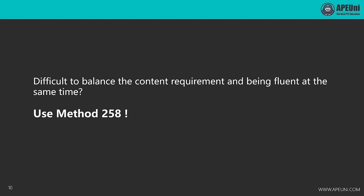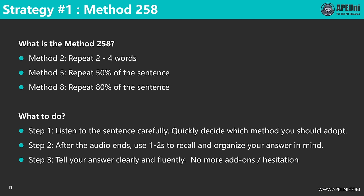Let's learn how to solve this dilemma with Method 258. Method 258 represents three different methods of repeating. Method 2 means repeating 2 to 4 words, mainly content words. Method 5 is to repeat 50% of the sentence. Method 8 is to repeat 80% of the sentence. For the general steps: in Step 1, listen to the sentence very carefully, try to comprehend it, and quickly decide which of the 258 methods to use based on the difficulty.